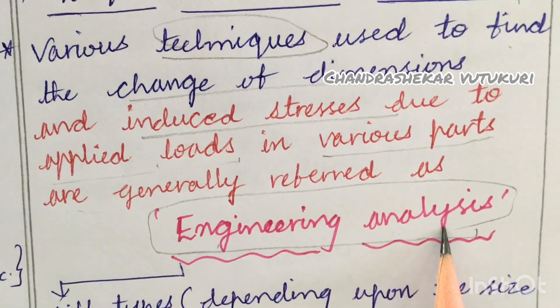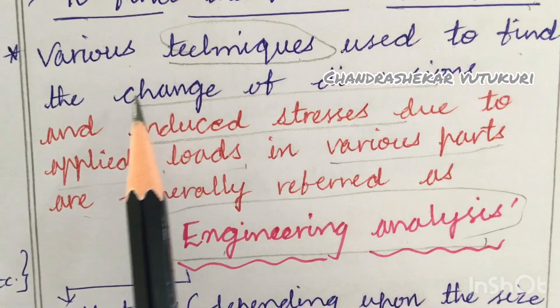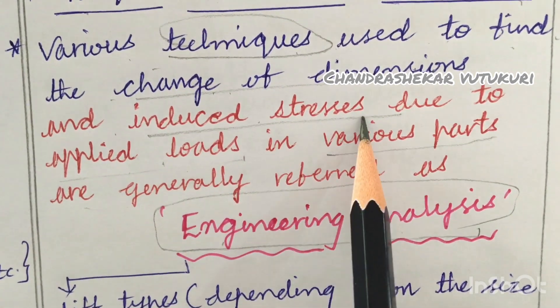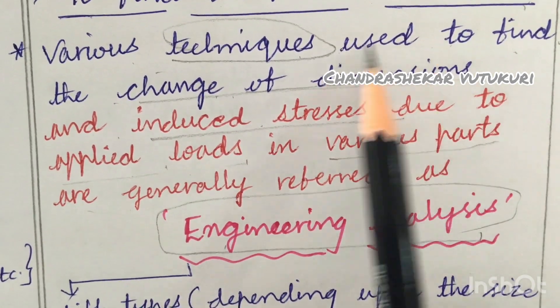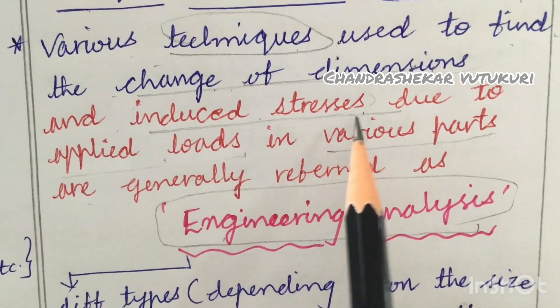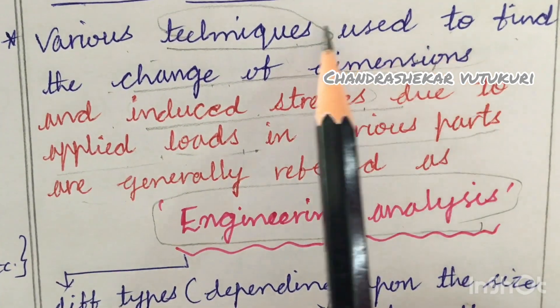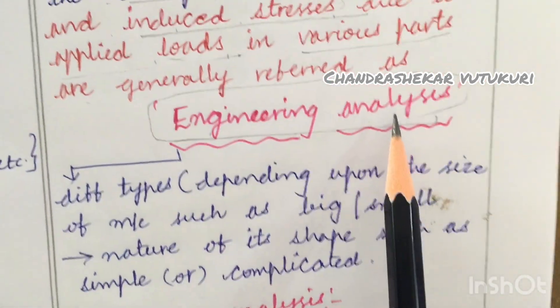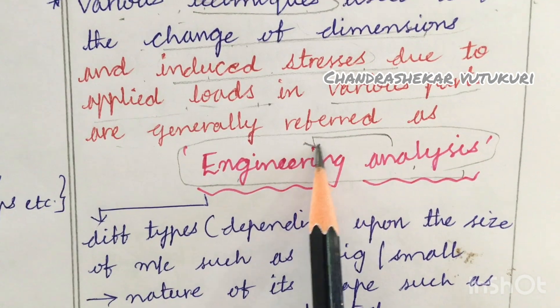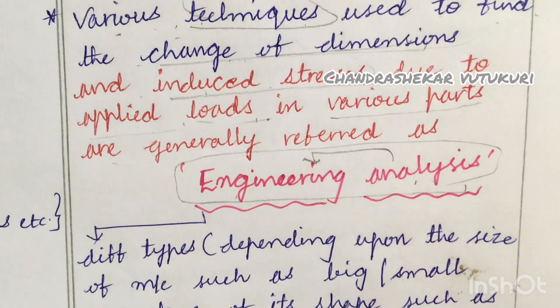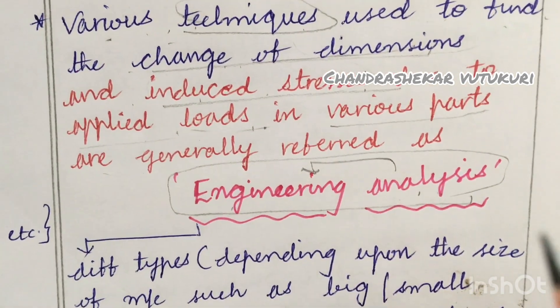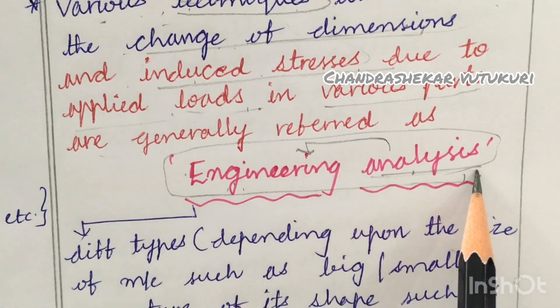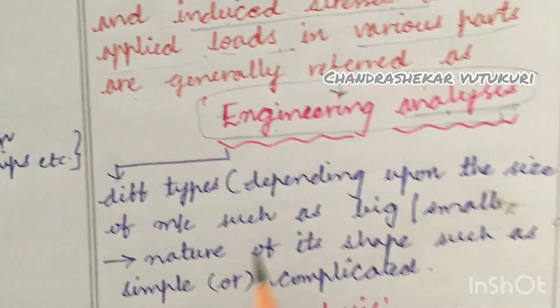We are entering into FEM now. Engineering analysis means to find the various techniques used to find the change of dimensions and induced stresses - where the length, breadth or dimension changes, and the induced stresses when we apply loads, where it changes. We find this using various techniques. This is called analysis. That is what type of analysis? As it is an engineer working on it using some mathematical relations, some analytical analysis is done. That is the reason it is called engineering analysis.